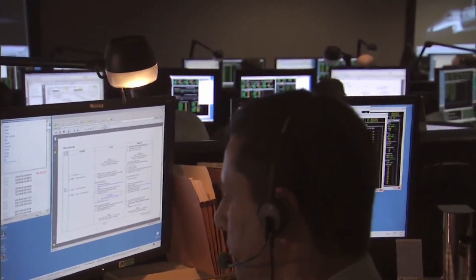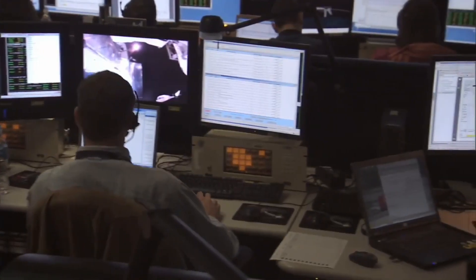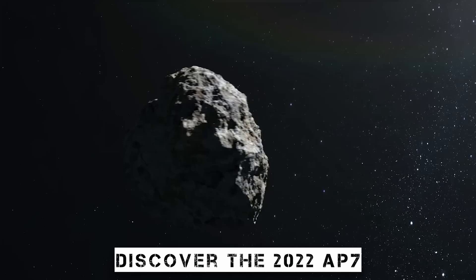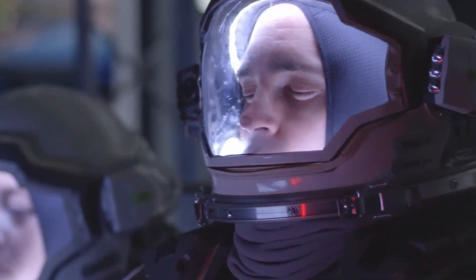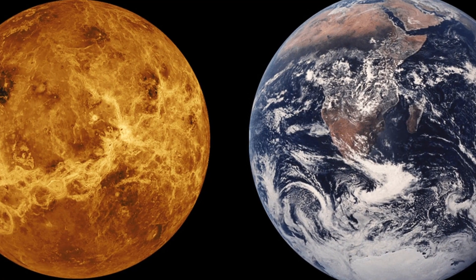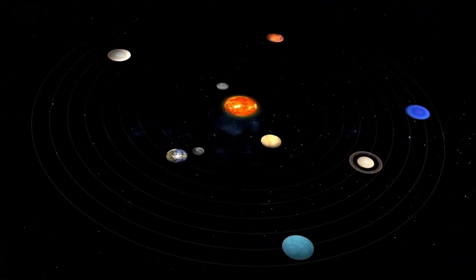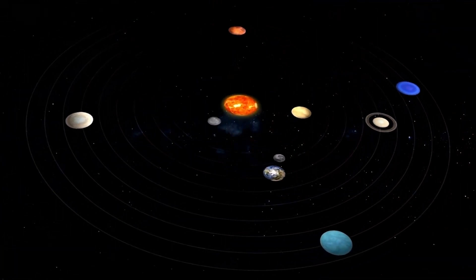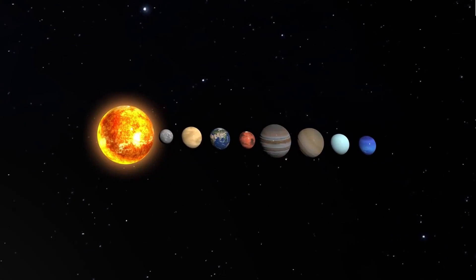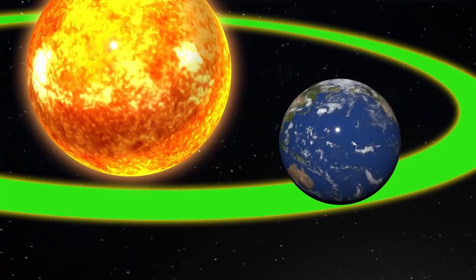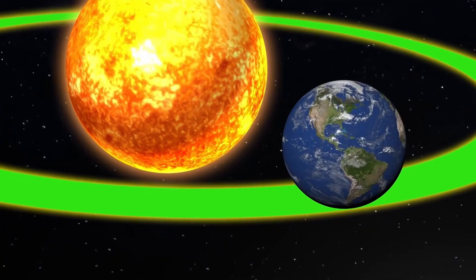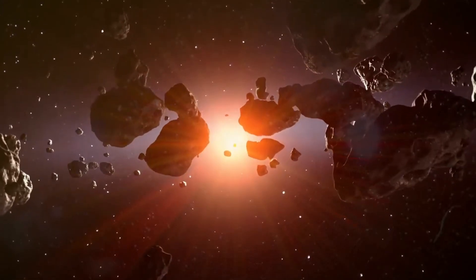Scientists utilized a telescope at twilight just after the sun had set to discover the 2022 AP7. Because they were searching for asteroids near Venus and Earth, they were forced to take action. Right now, Venus is located on the opposite side of the sun from Earth. It is quite challenging to make observations near the sun. As a consequence of its brightness creating a blind spot, it obscures the small asteroid's weak light reflections. However, there is a brief period right before and after sunset during which the sun's glare does not obscure the view.